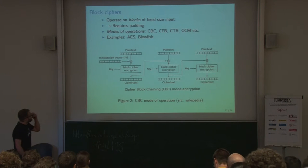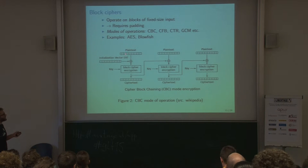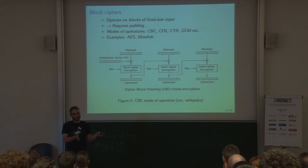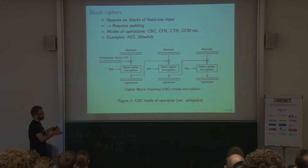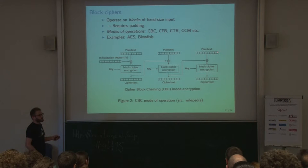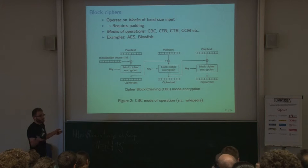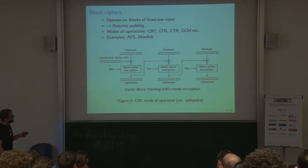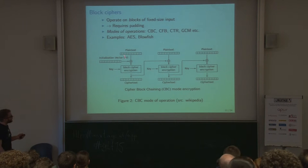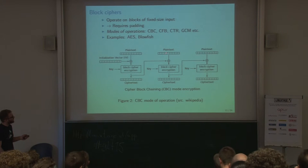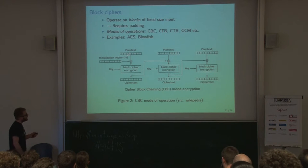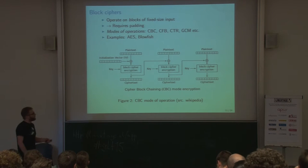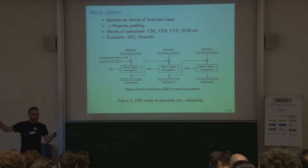Block ciphers operate on fixed-size inputs. AES has 128-bit input, so that's 16 bytes. If you want to put in more, you have to split your input and do it multiple times. If the last block doesn't fill up to 16 bytes, you add padding — random data or something chosen — which you remove on decryption. Because of this and the modes of operation, the output always increases by a fixed size: 16, 32, and so on — never something in between.